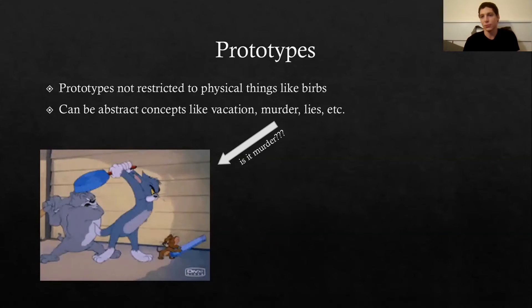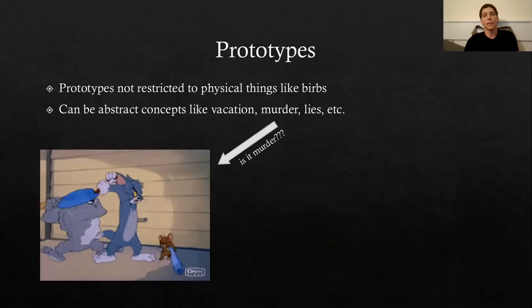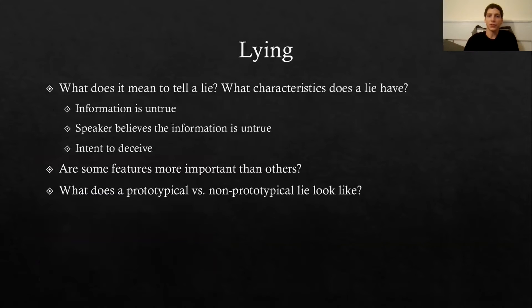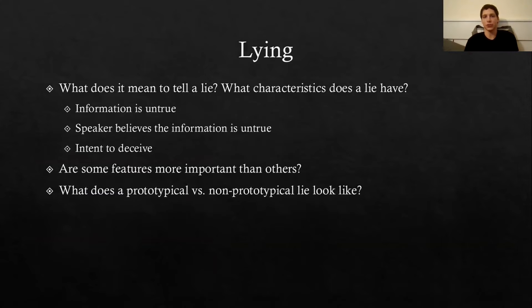We could ask: is this a prototypical murder? Yes or no? But prototypes can also be applied to things like lies. When we think about lying, we can ask what it means to tell a lie and what characteristics a lie has. When we look at these kinds of things in comparison to prototypes, this falls under a specific field called semantics.